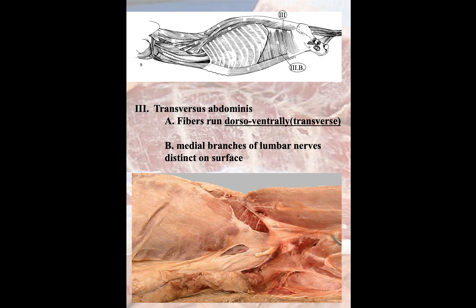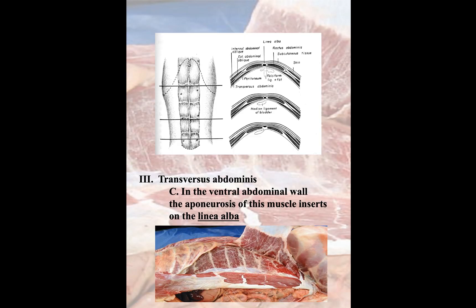The third muscle is the transverse abdominal muscle. Its fibers run straight from the dorsal to the ventral portion. In this region, we can see the medial branches of the lumbar nerves running between the internal abdominal oblique and the transverse abdominal muscle. These white lines represent the medial branches of the lumbar nerve. This muscle also inserts into the linea alba.